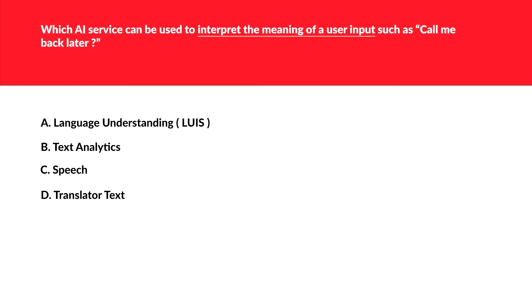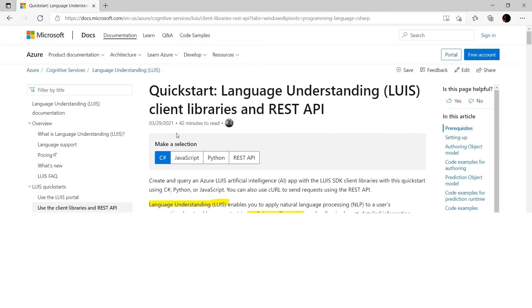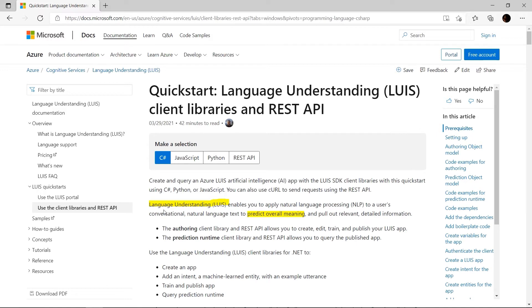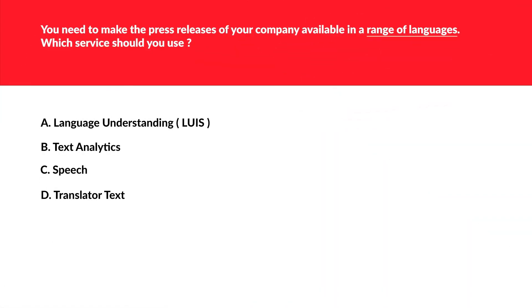The main keyword in this next question is 'interpret the meaning of user input' — you want to understand the input. Whenever understanding is the goal, only one option should strike your mind: the rest are distractors. Language Understanding, or LUIS, is the correct option. If you look at the official documentation under LUIS, it states 'predict overall meaning,' which is exactly what we are looking for. So option A is correct.